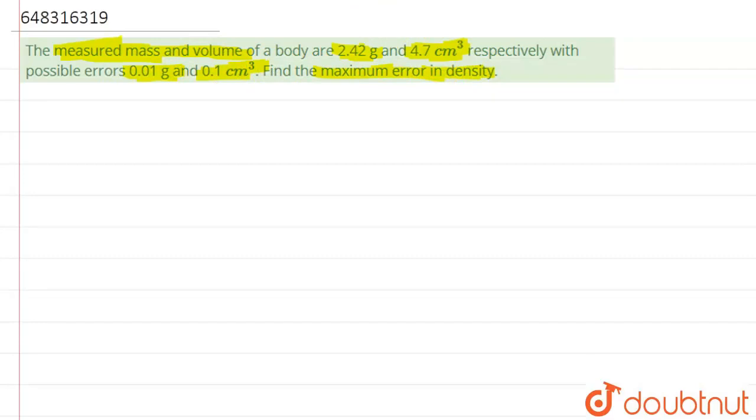So if you remember the formula for density, firstly we will write that down. Density is given by simply mass upon volume. So basically the relation is mass divided by volume. We have been given mass, we have been given volume, nothing to worry.